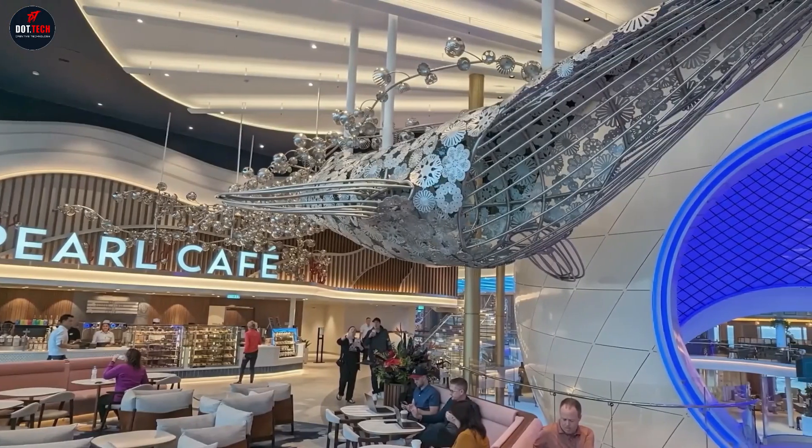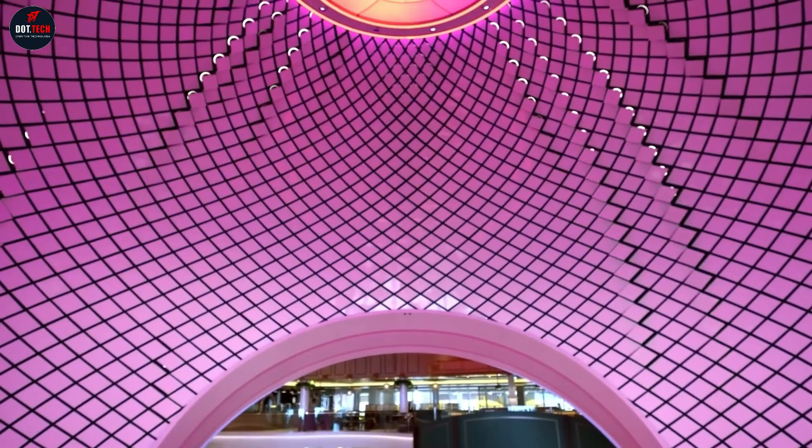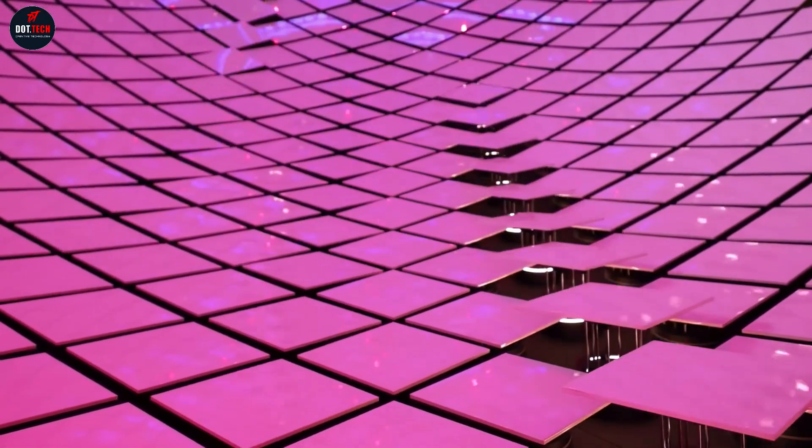If the sea is stormy, then the sculpture tiles will sway actively. And vice versa, if the sea is calm, then the tiles will roll over, soothing the ship's guests with their smooth movement.